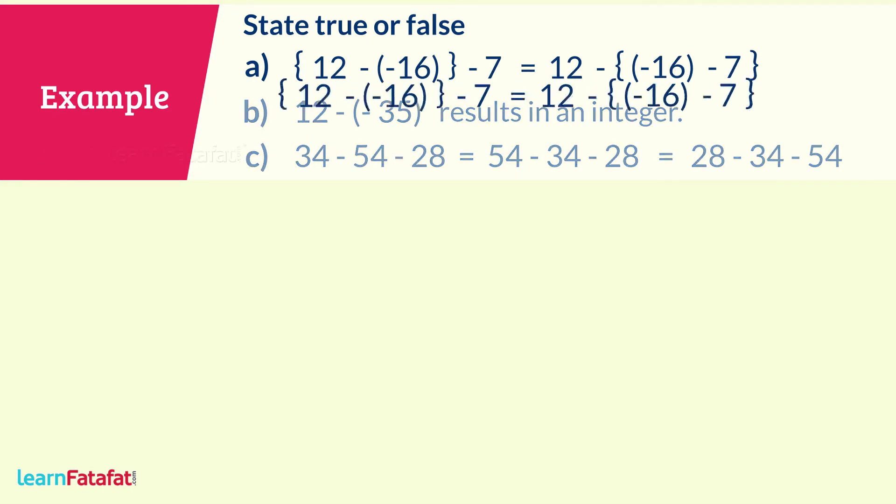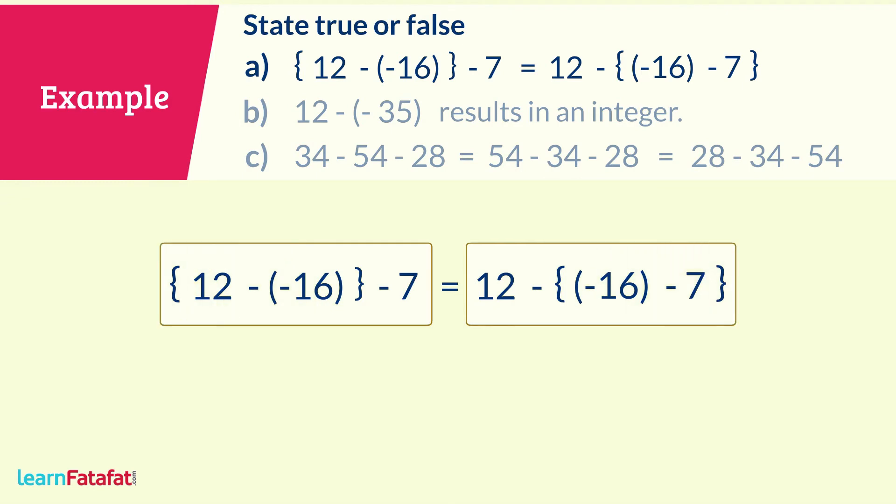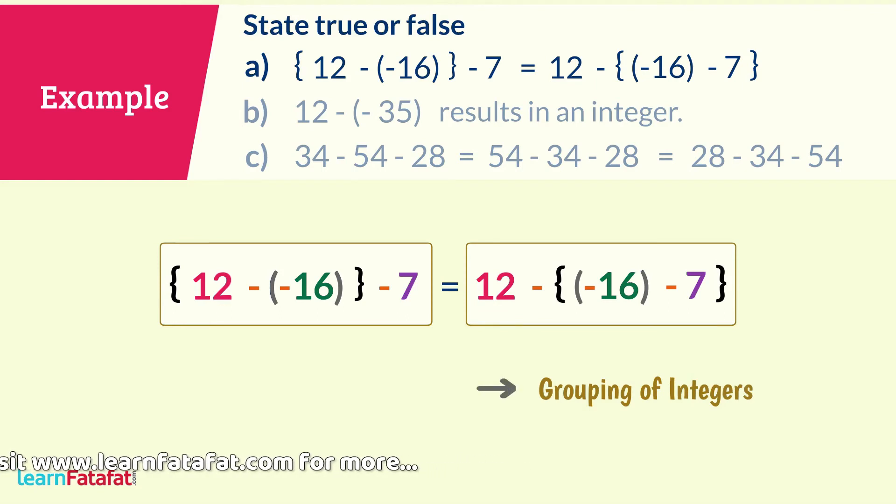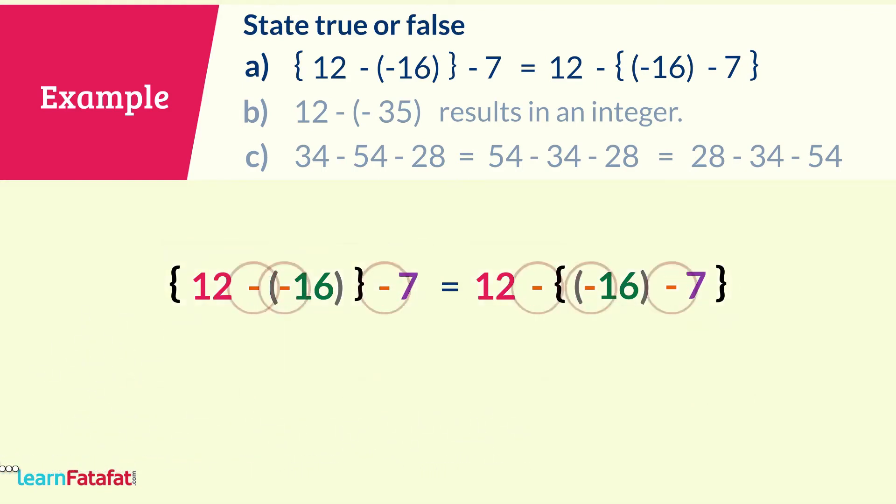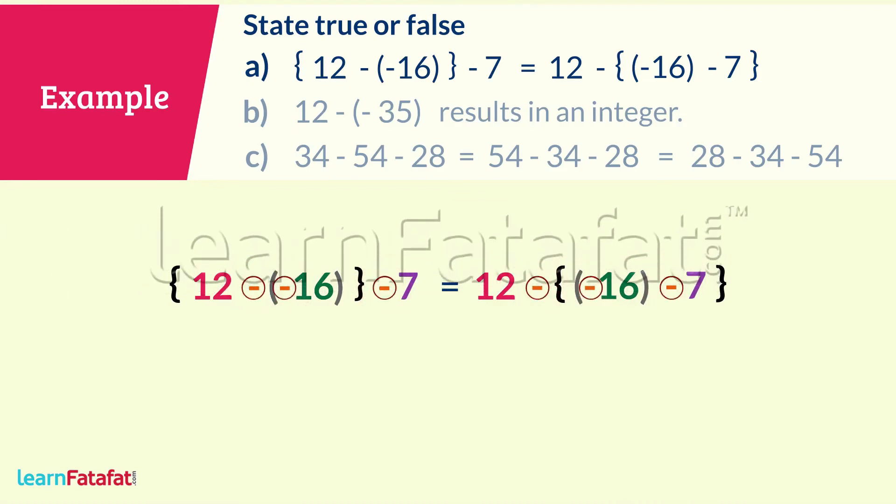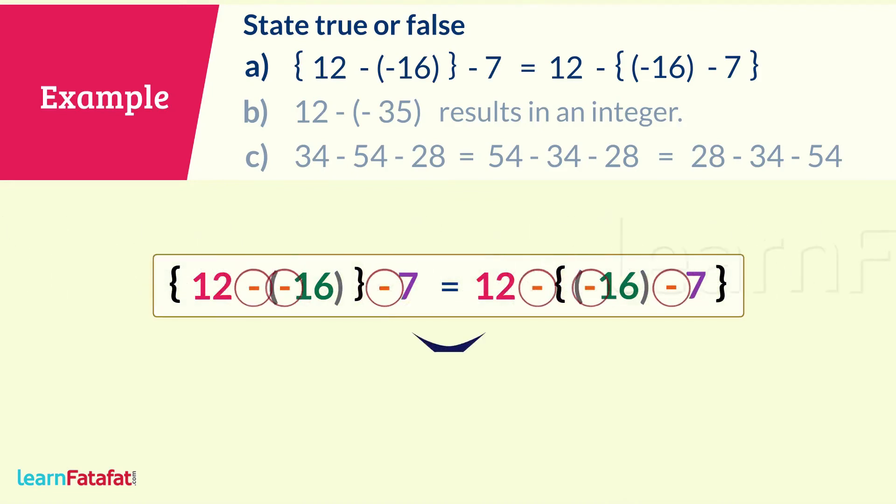Let's talk about statement A. We can calculate the values on both sides to find if the statement is true or false. But if we look more closely, we find that there are the same numbers on both sides of the equal sign. However, they are grouped differently. Grouping of integers is related to associative property of integers. Subtraction does not follow associative property. So, the first statement is false.